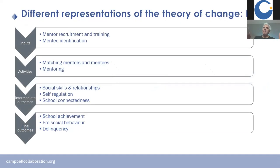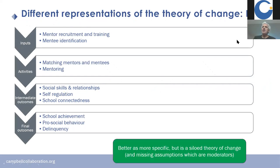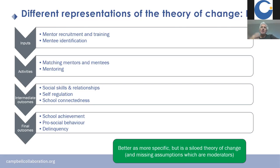A slightly better version lists actual inputs, activities, and measures — that's good. But the problem is it's still a siloed theory of change, where everything flows from inputs to activities to outputs without identifying specific causal chains. We want to identify specific causal chains related to specific activities and outputs having specific effects in terms of intermediate and final outcomes. I haven't got as far as I'd like with that unpacking because mentoring is a bit of a black box. You want to actually be testing specific causal processes, not just whether mentoring has an effect — yes or no.